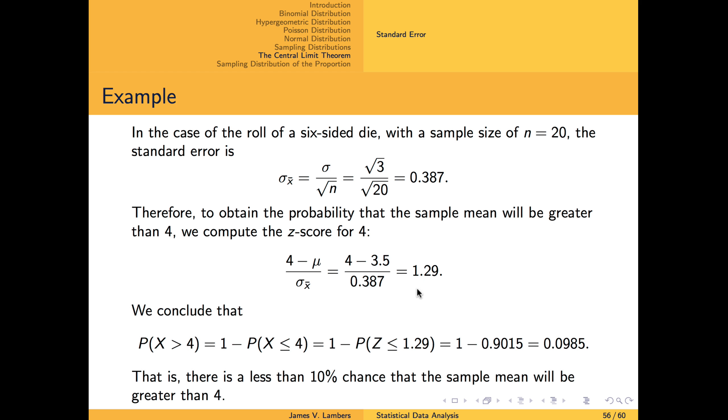Then we can use a normal distribution table on this z-score and basic properties of probability to obtain the probability we're after.